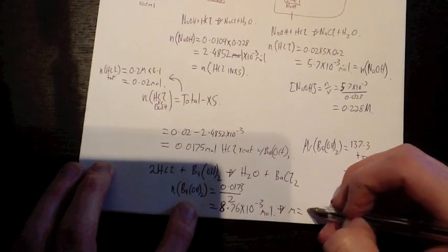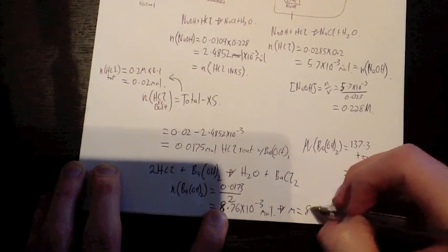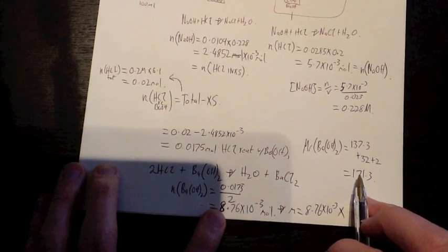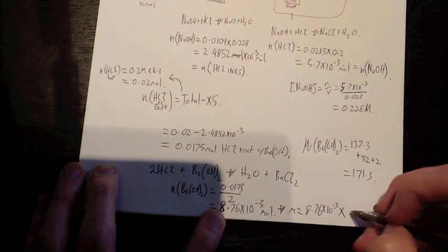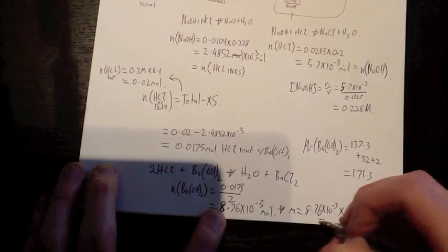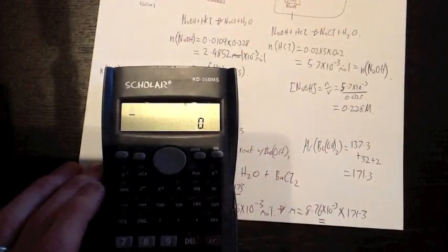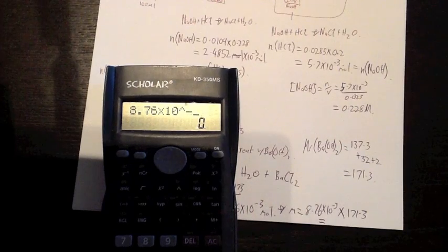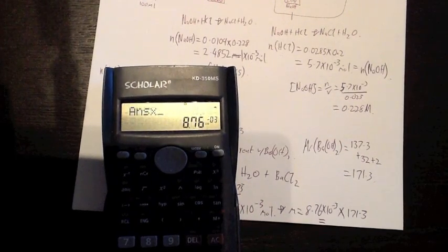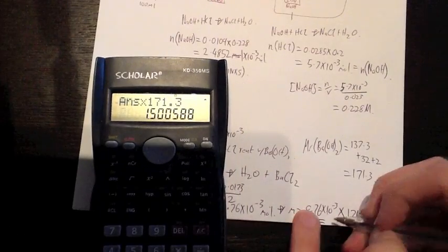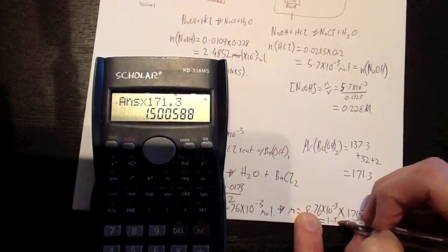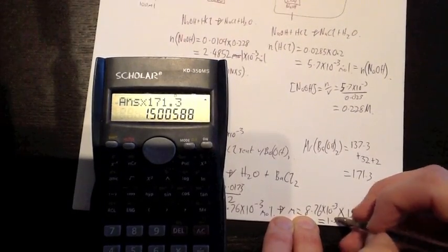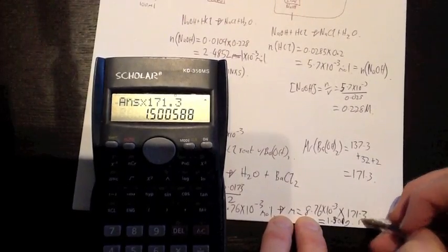Now mass equals our number of moles, which is 8.76 times 10 to the power of negative 3 times our molar mass, which is 171.3 equals 8.76 times 10 to the power of negative 3 times 171.3 equals 1.500 grams, give or take, of 0.01 grams if you will, if you want to round it up properly. So this is how much you have of barium hydroxide.